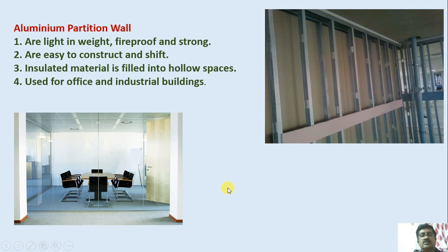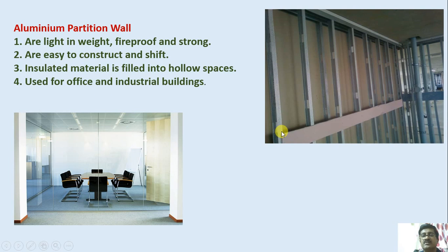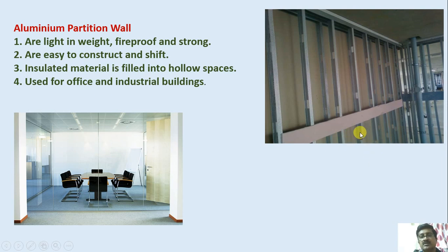Nowadays, the most popular partition wall becoming is the aluminum partition wall. These partitions are provided with aluminum members where the interspaces can be filled with various materials — it can be aluminum sheets, or sometimes glass is also used. These partitions are also attractive and free from the attack of white ants.